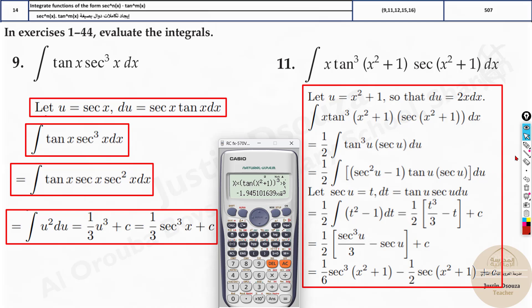So write this answer down. Whatever answer you get, write it over here. Negative 1.945 into 10 to the power minus 3.